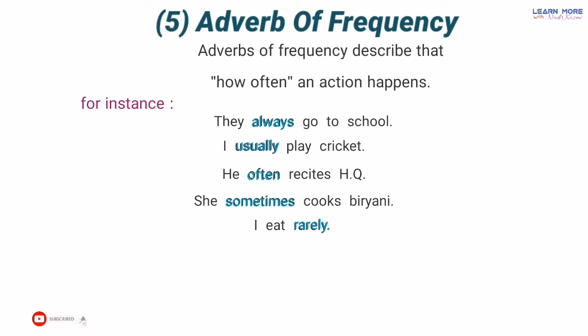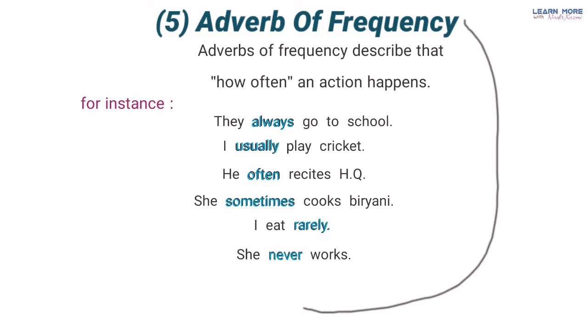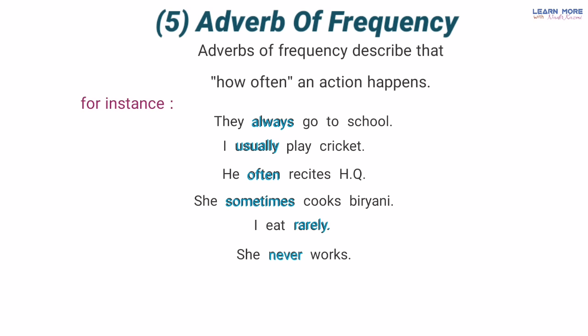'How often does she work?' — woh kitni baar kaam karti hai, kab kab kaam karti hai? 'She never works' — woh kabhi bhi kaam nahi karti. Ab jo 'never' hai yeh bhi ek adverb of frequency hai jo uske kaam ki frequency ke baare mein bata raha hai ke woh kitni baar kaam karti hai, kab kab karti hai: never, kabhi bhi nahi.